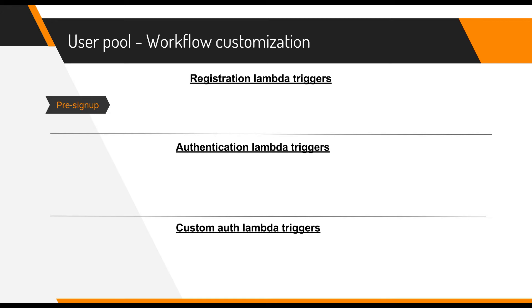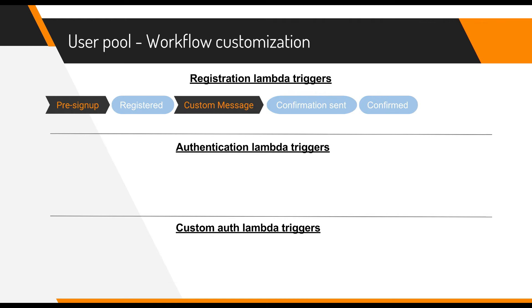In the registration flow, the first trigger is pre-signup, invoked when a sign-up request is received but not yet processed — you may want to check if the user already exists or has the right to register. The user then enters the registered state, and Cognito optionally sends a confirmation message to the user's email or mobile phone. You have a trigger to customize these messages before they are sent. Once the user confirms, they become a confirmed user, and you have a post-confirmation trigger where you might add the user to a group or perform any extra logic.